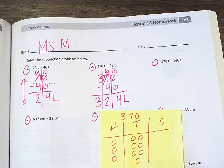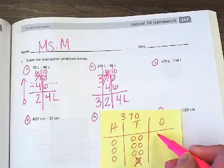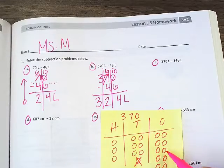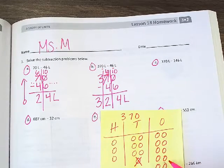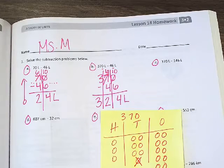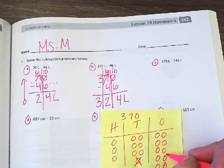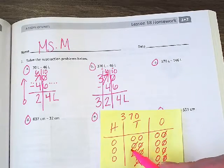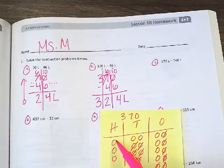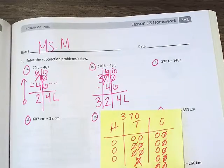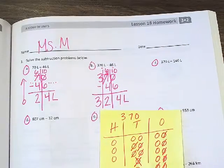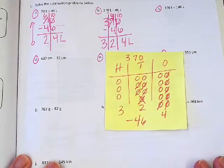So if I want to take 46 away, I know I have to take one of these tens. Two, four, six, eight, ten. Now can I take 46 away? I can. I can cross off six ones: one, two, three, four, five, six. I can cross off four tens: one, two, three, four, and no hundreds. What am I left with? One, two, three hundreds, one, two, two tens, one, two, three, four ones. Does that equal 324?